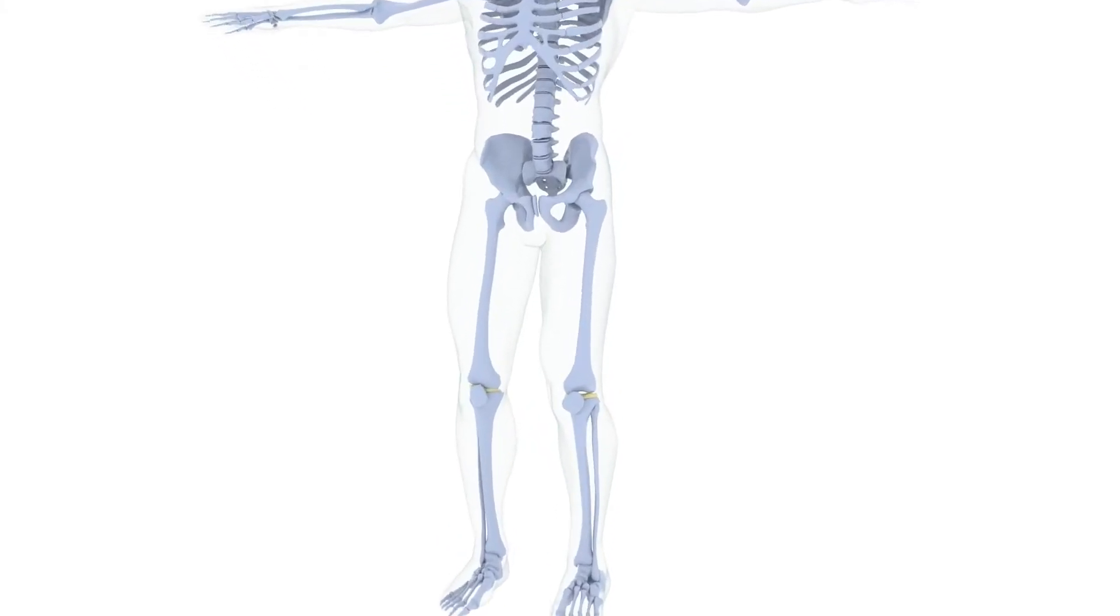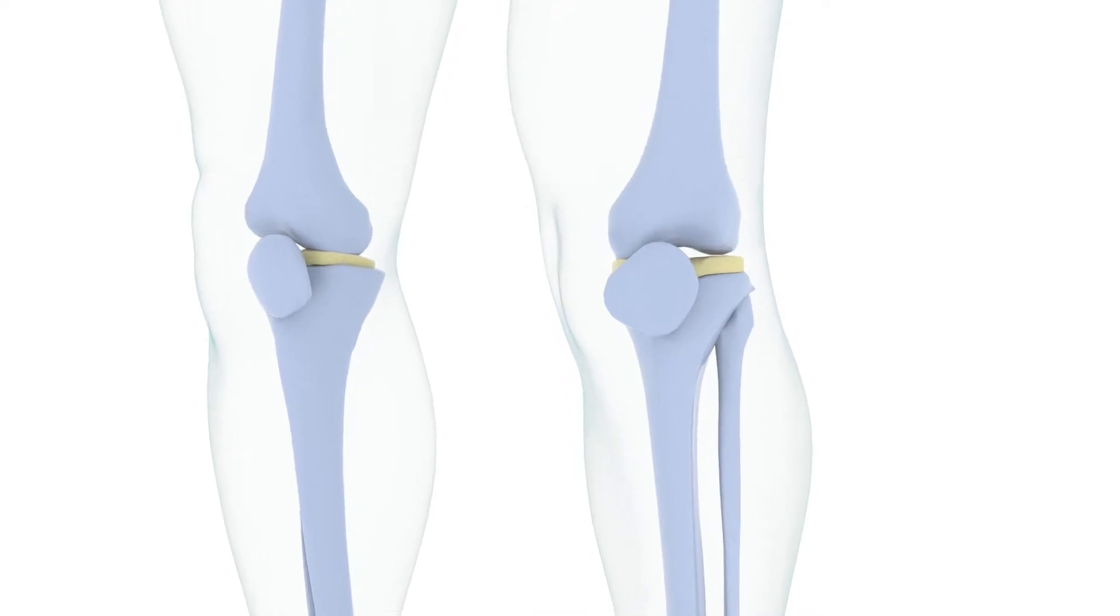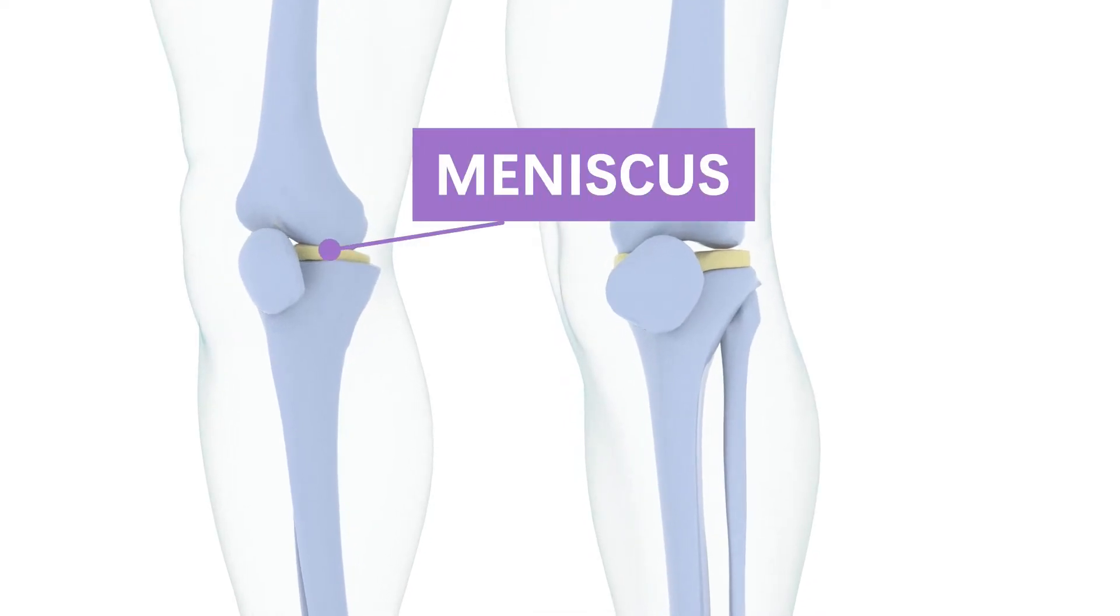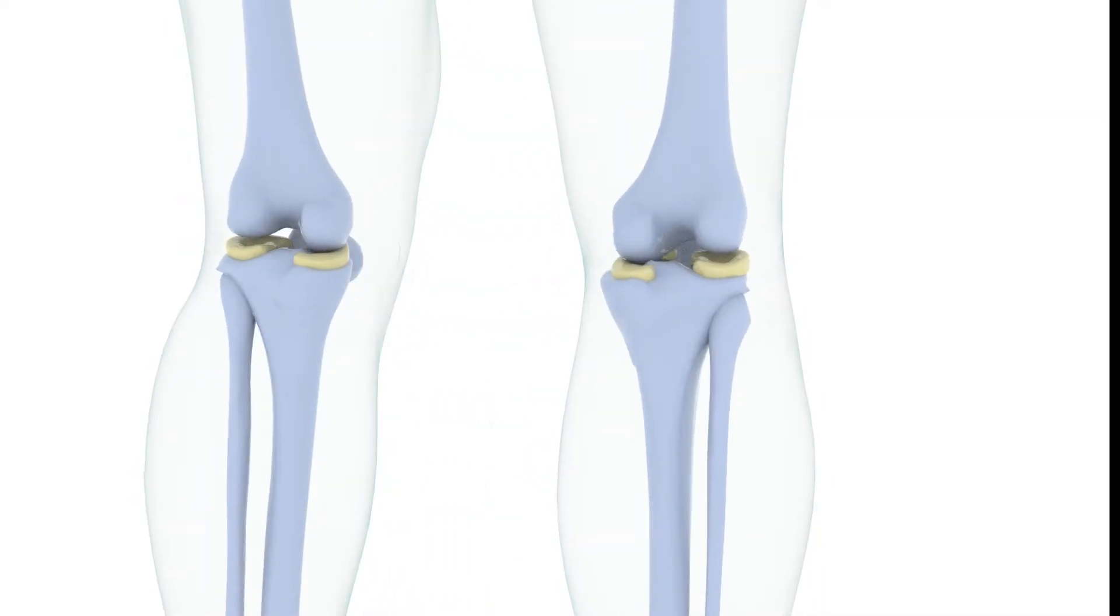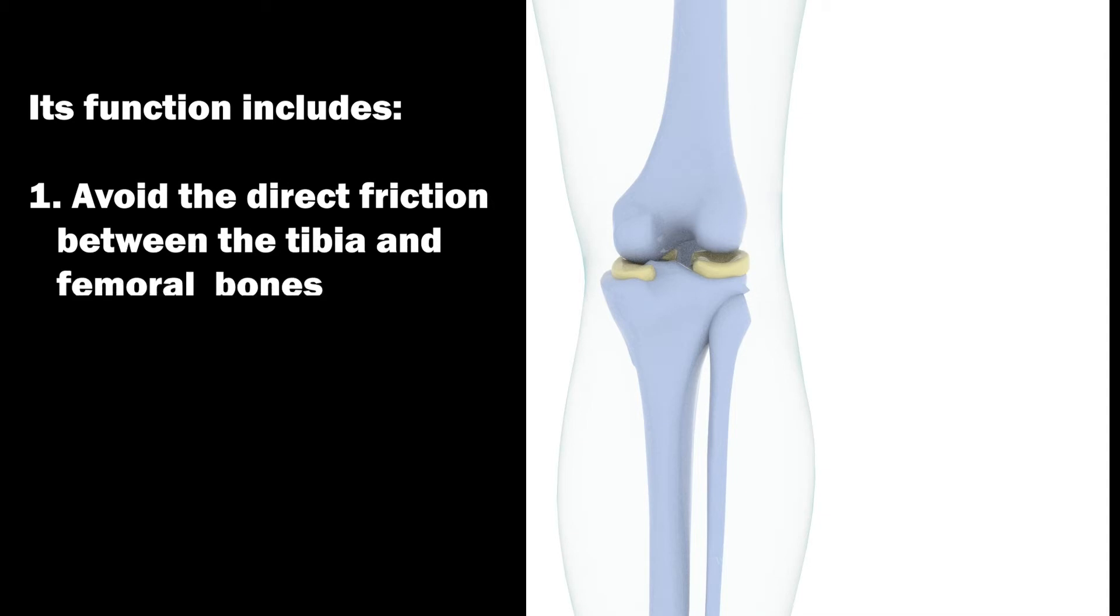The meniscus is the crescent-shaped fibrocartilage attached to the articular surface of the tibia. The meniscus consists of medial and lateral parts. Its function is to avoid the direct friction between the tibia and the femoral articular surface.